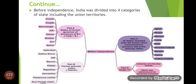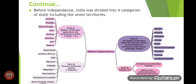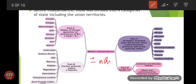Before independence, India was divided into four categories of states including Union Territories: Part A, Part B, Part C, and Part D.